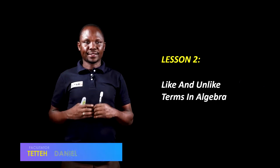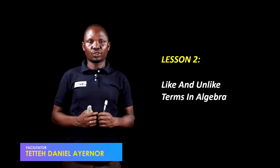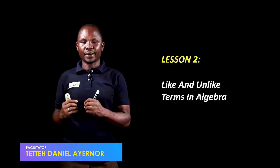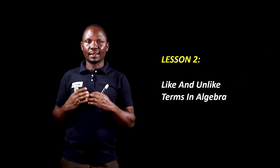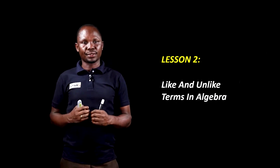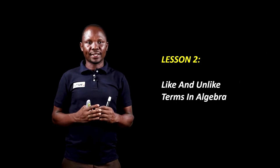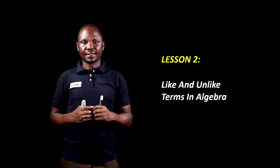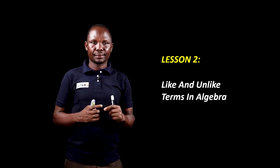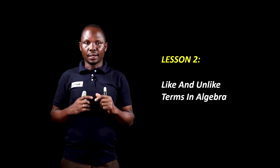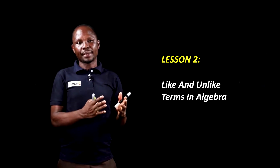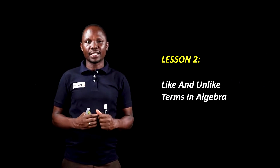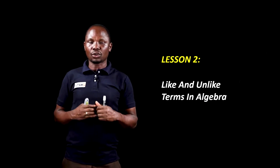In our previous lesson, we studied about introduction to algebra. We said algebra is a branch of mathematics where letters are used to represent unknown quantities. An algebraic expression containing a single term is called a monomial. An algebraic expression containing two terms is called binomial, and an algebraic expression containing three terms is called trinomial.